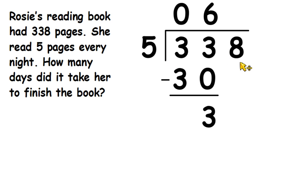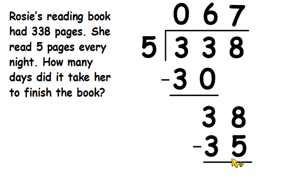Then we can move on to this digit, bring that down. 38 divided by 5. So 5, 10, 15, 20, 25, 30, 35. 40 would be too many. So 7 times 5 is 35. If we subtract that from 38, there's no more digits to deal with, so that will give us our remainder. 38 subtract 35 is 3.